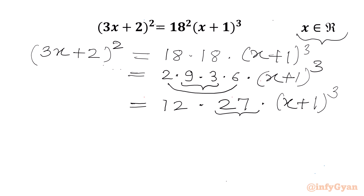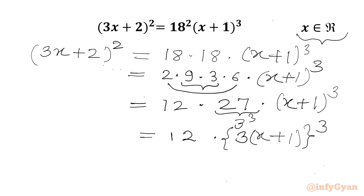Now 27 is 3 cubed, so I can combine both bases since the exponent is 3. I will write 12 times (3 times (x + 1)) whole cube, or we can write 12 times (3x + 3) whole cube.